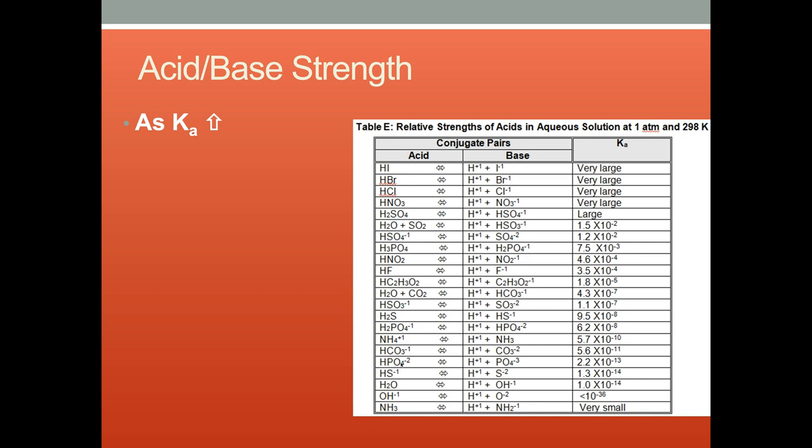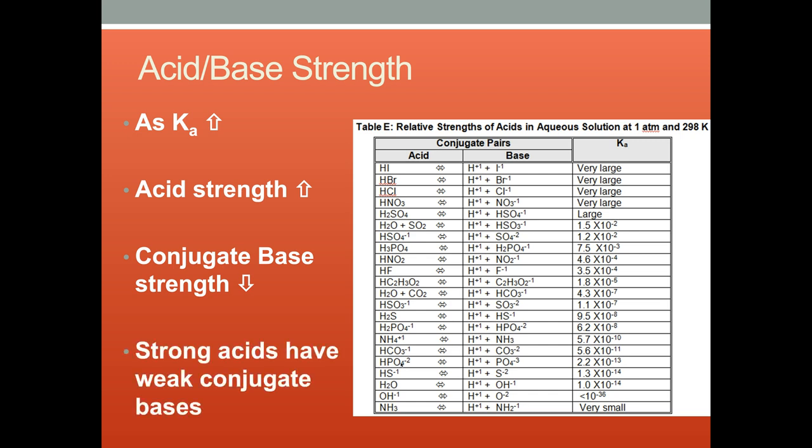As Ka increases, acid strengths get stronger, conjugate base strength decreases. Strong acids, therefore, have weak conjugate bases. If HI ionizes fully into I-, that means it's a very rare thing that an I- will be able to gain the H+ back.